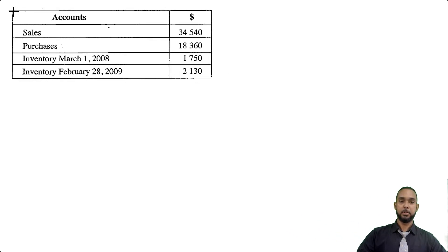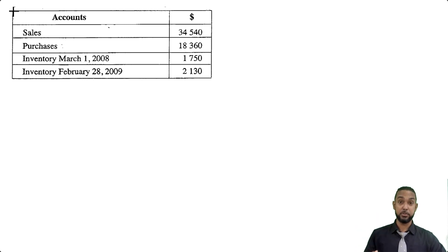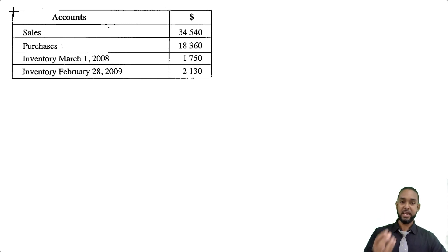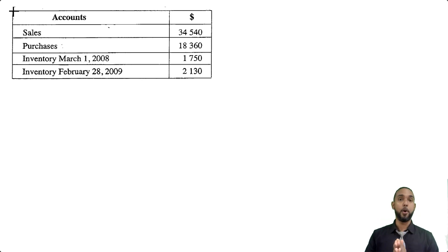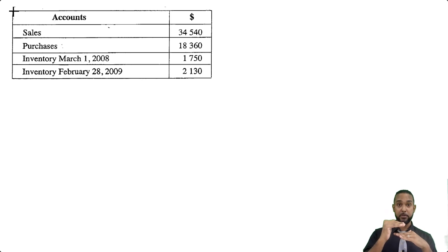A lot of you may not actually be taught what closing entries are. If you were, leave a comment below. What closing entries are is simply transferring the balances from temporary or nominal accounts to the income statement at the end of a period. Those accounts — revenues and expenses — are closed off; their balances are reduced to zero because they're transferred and summarized in the income statement to give net profit or net loss.